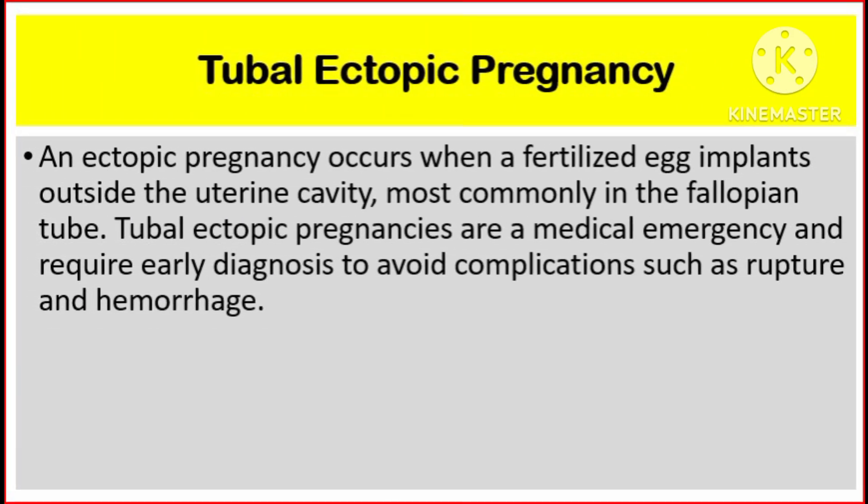First, we will talk about tubal ectopic pregnancy. An ectopic pregnancy occurs when a fertilized egg implants outside the uterine cavity, most commonly in the fallopian tube. Tubal ectopic pregnancies are a medical emergency and require early diagnosis to avoid complications such as rupture and hemorrhage.